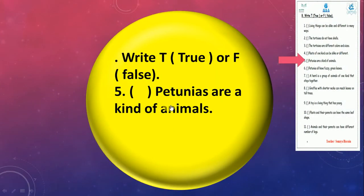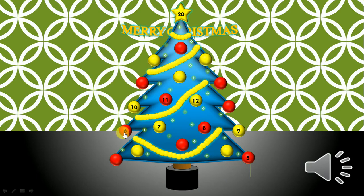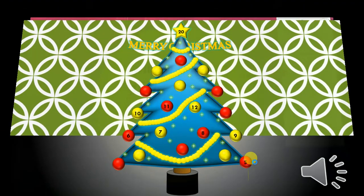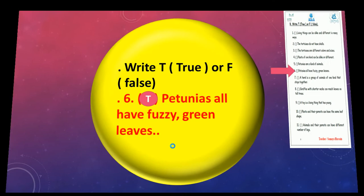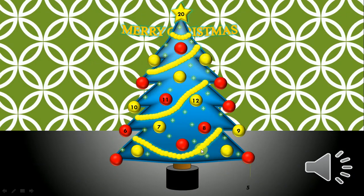Number four: True or false, petunias are a kind of animals. Do you think? No, of course not. They have leaves and flowers, so it's a plant. So five, we're gonna write F. Super, number five.